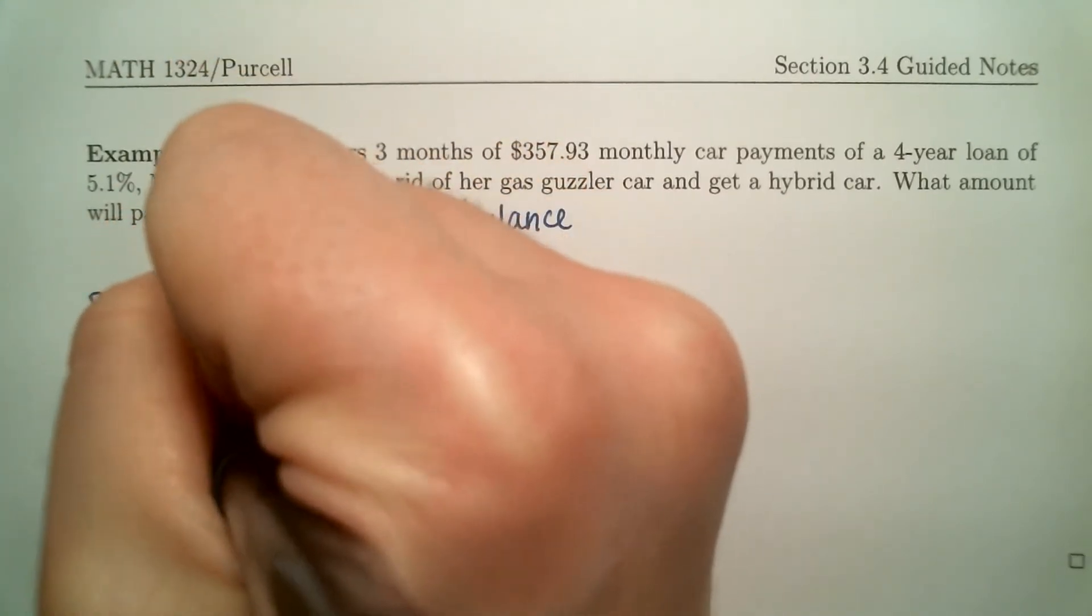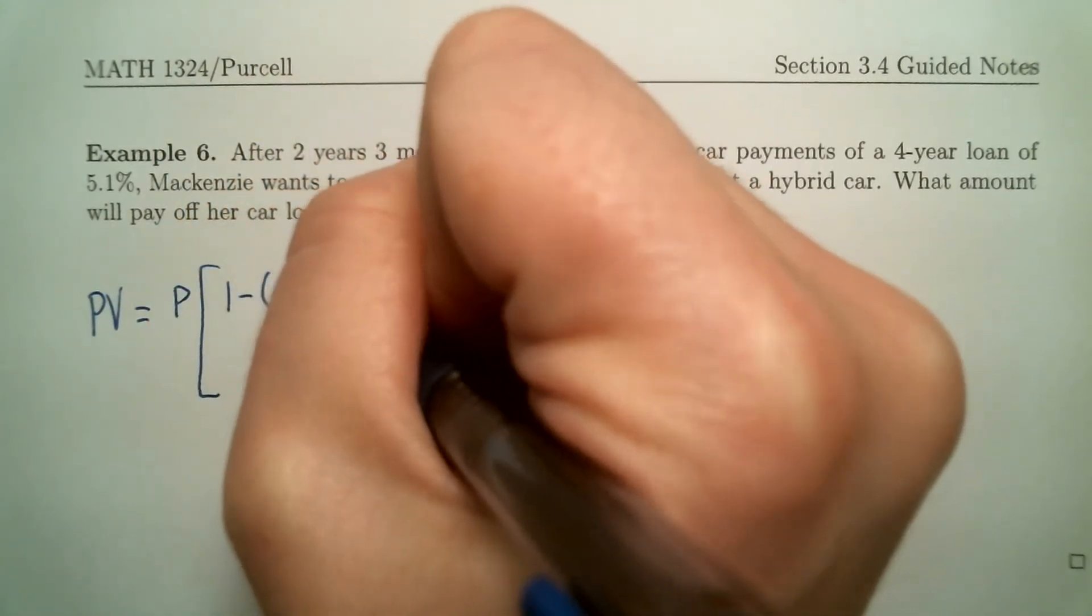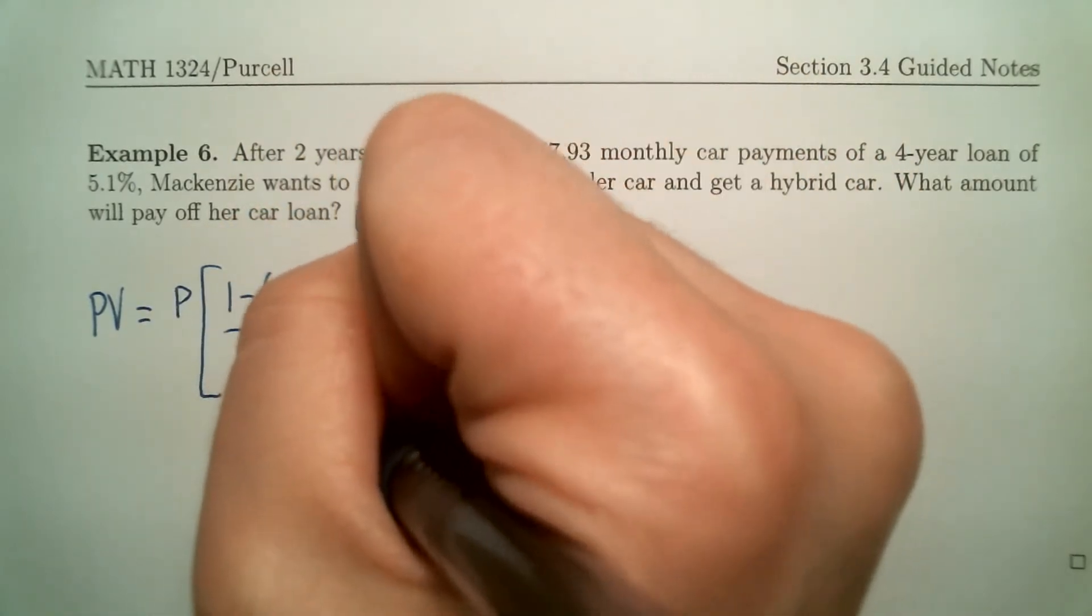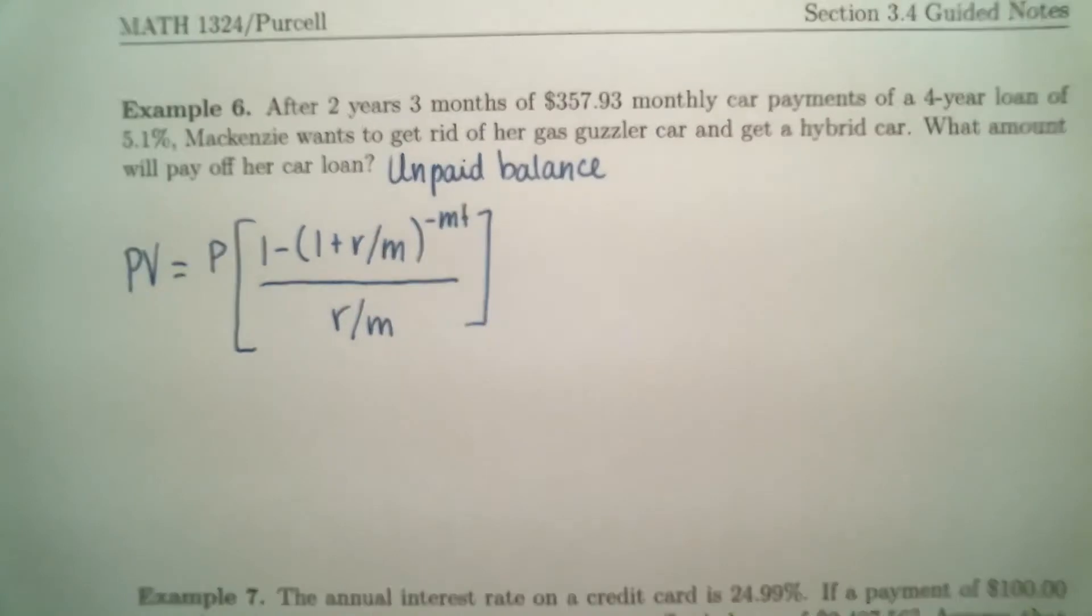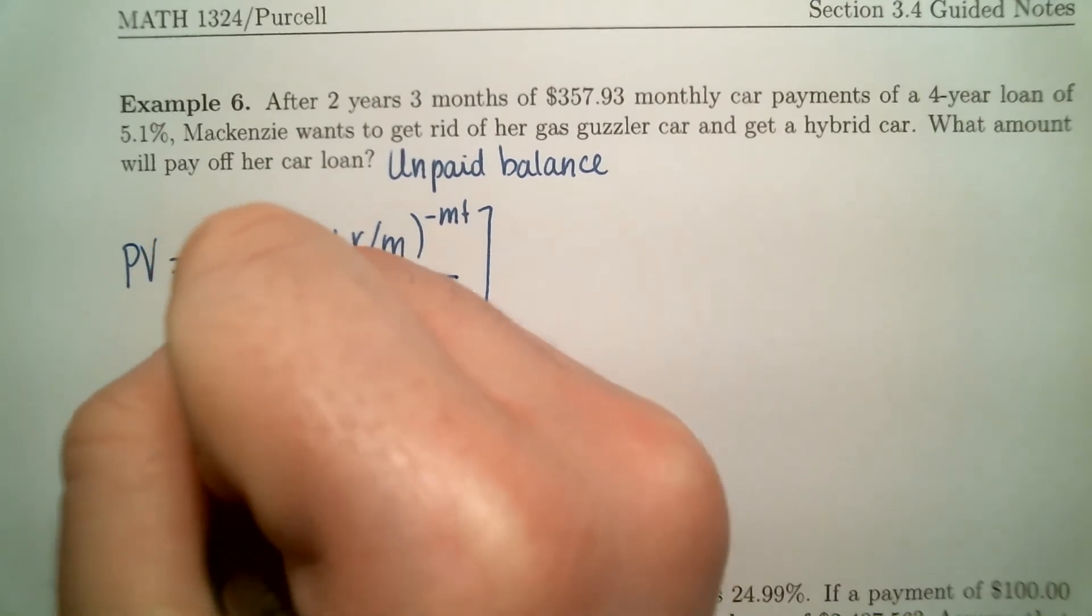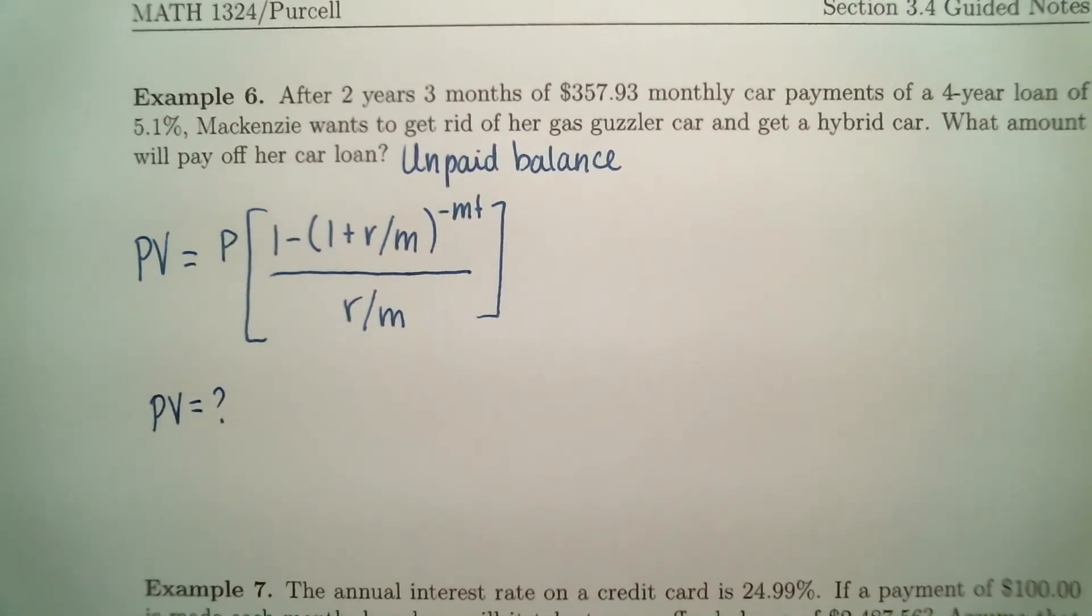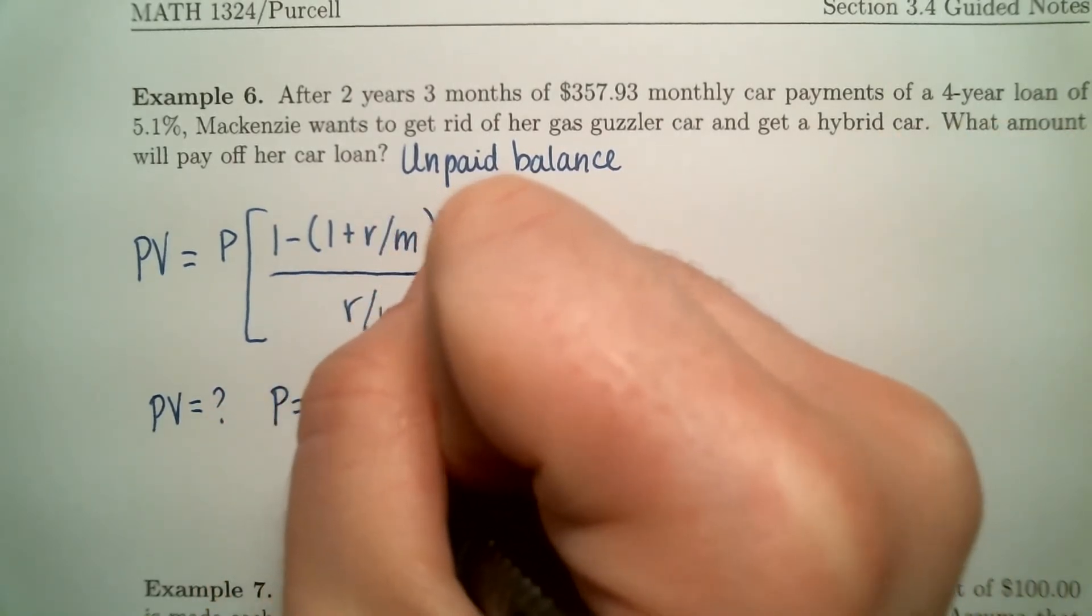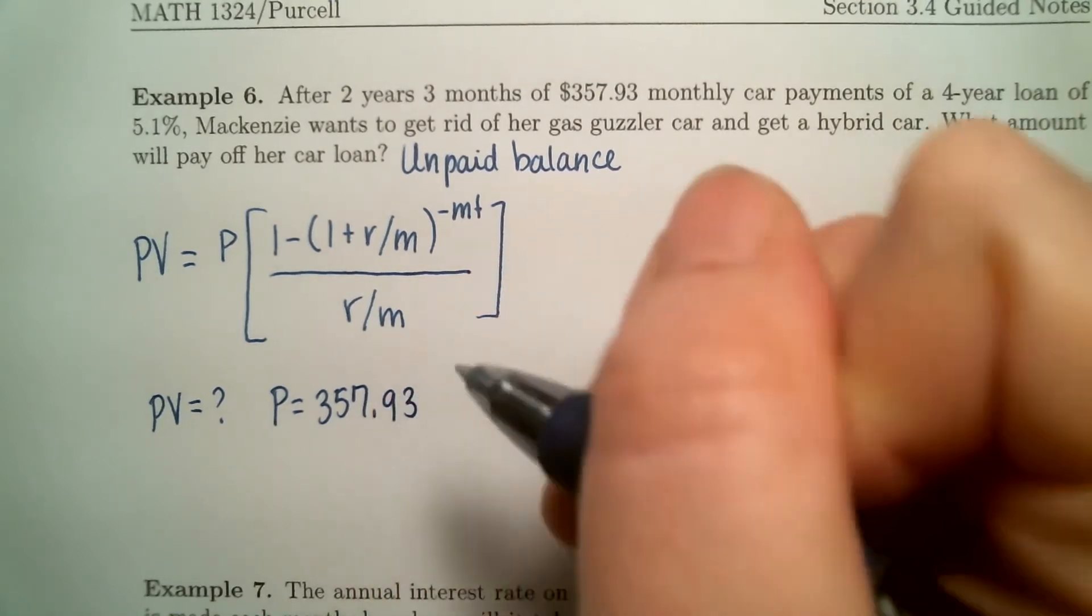So here's our formula. Let's talk about what we know and what we need to find. Remember with unpaid balance, if McKenzie wants to get rid of her car right now at the two-year, three-month mark, we need to know how much she still owes right now. So we're going to be looking for PV. She has been making monthly payments of $357.93. So that's the P value.